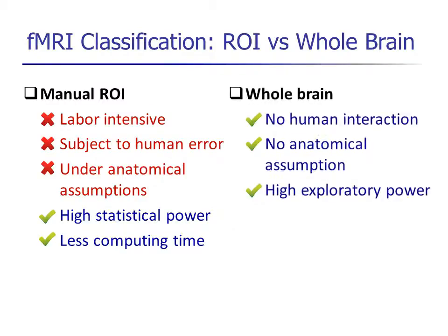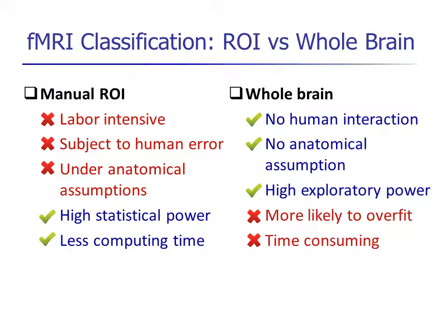In contrast, whole brain analysis needs no human interaction, no anatomical assumption, and has high exploratory power. However, due to big data volume and small sample size, it is more likely to overfit and has higher computational demand.